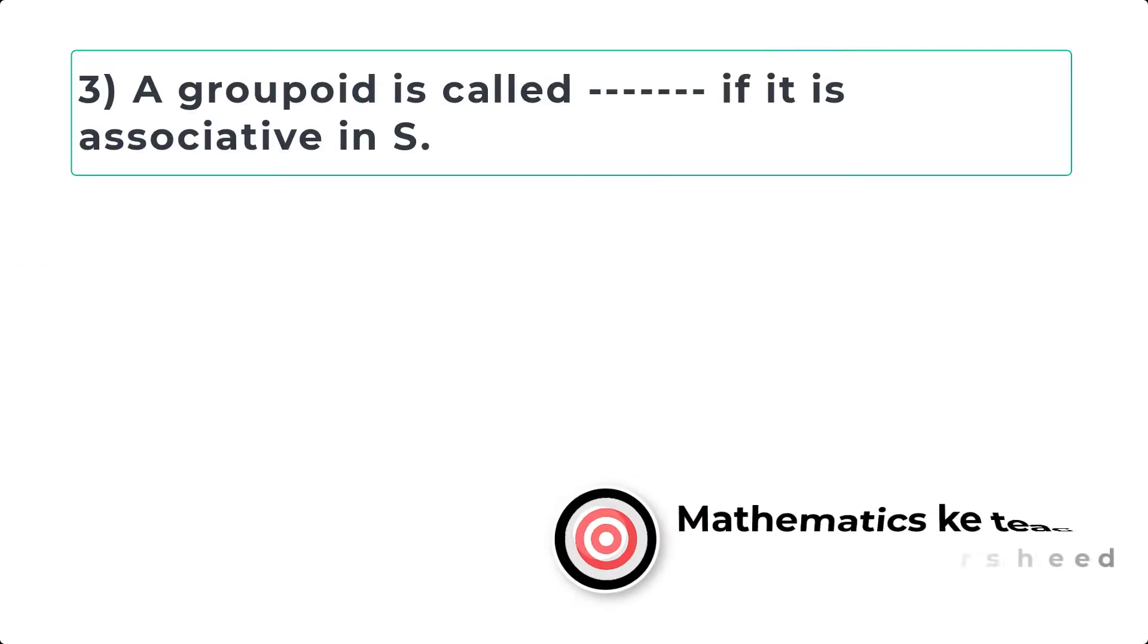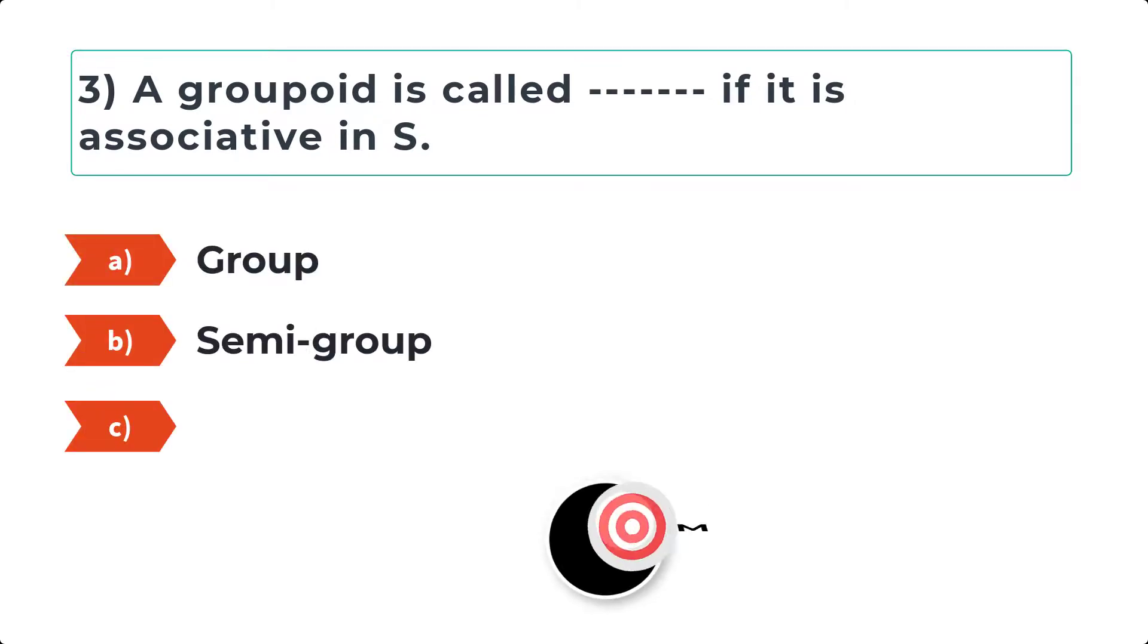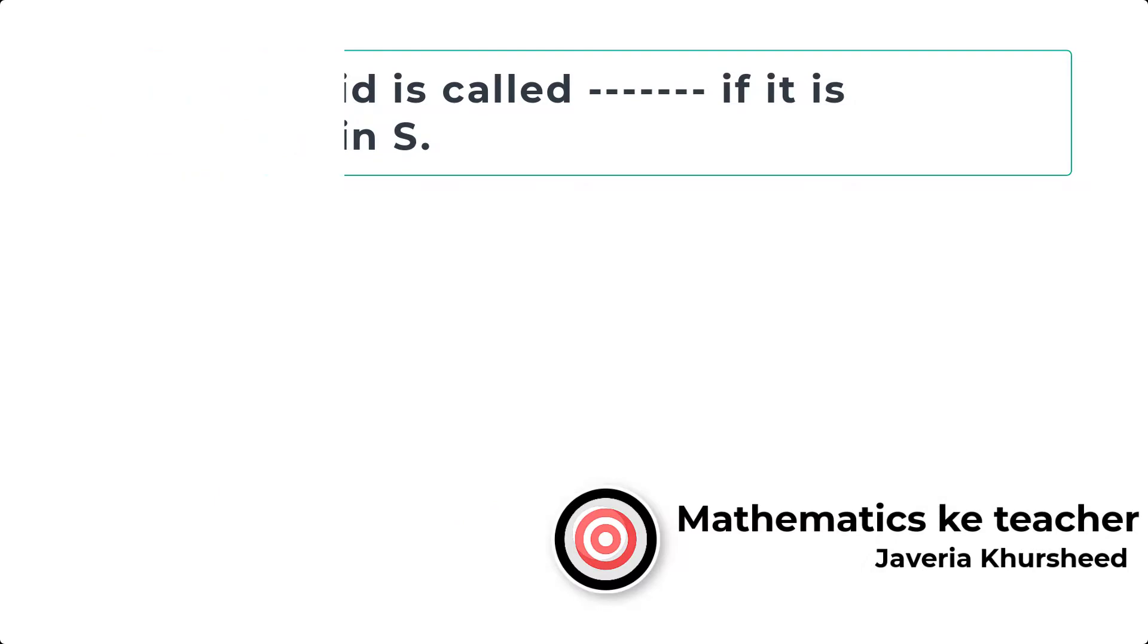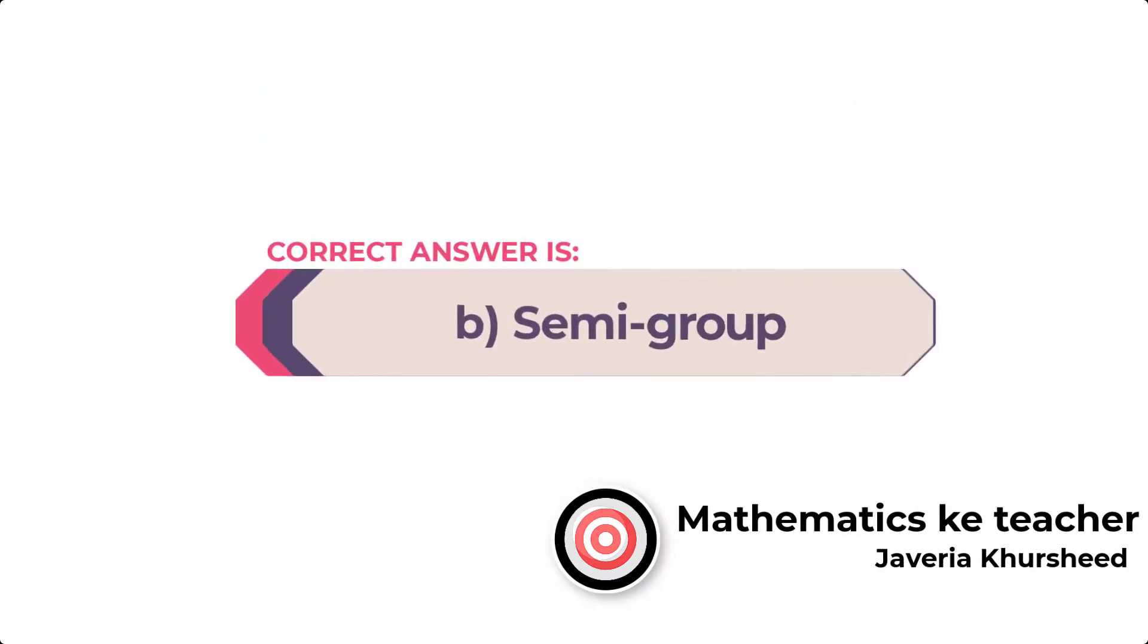Question 3: A groupoid is called dash if it is associative in S: A, Group; B, Semigroup; C, Cyclic group; D, Homomorphism. Correct answer is B, Semigroup.